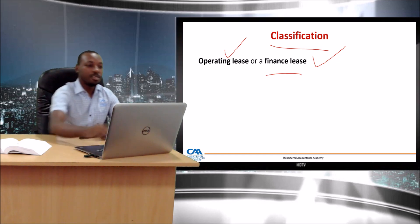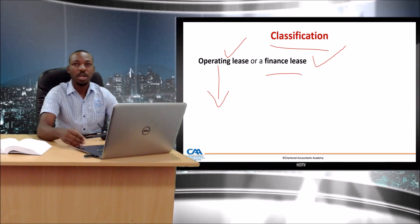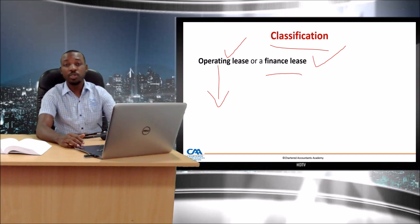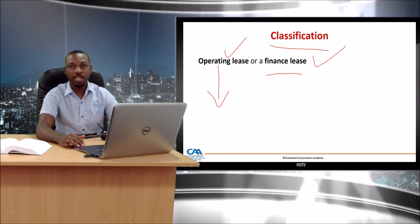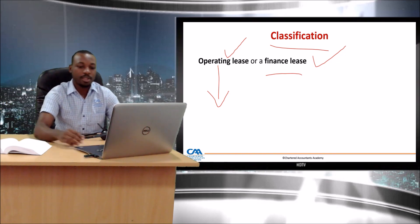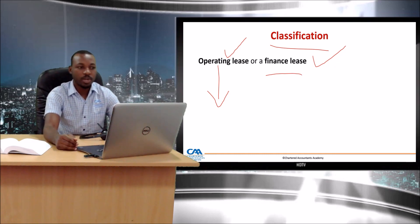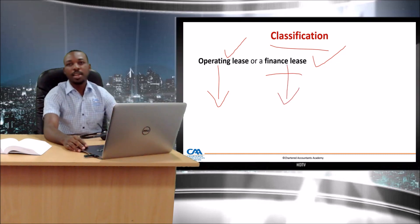If it's an operating lease, you are not going to de-recognize the asset you've rented out. Rather, it remains an investment property in your books. The monies you receive related to the rental of that asset need to be recognized as lease rentals uniformly throughout the period of the lease — some prefer to call this the straight-lining of the lease payments.